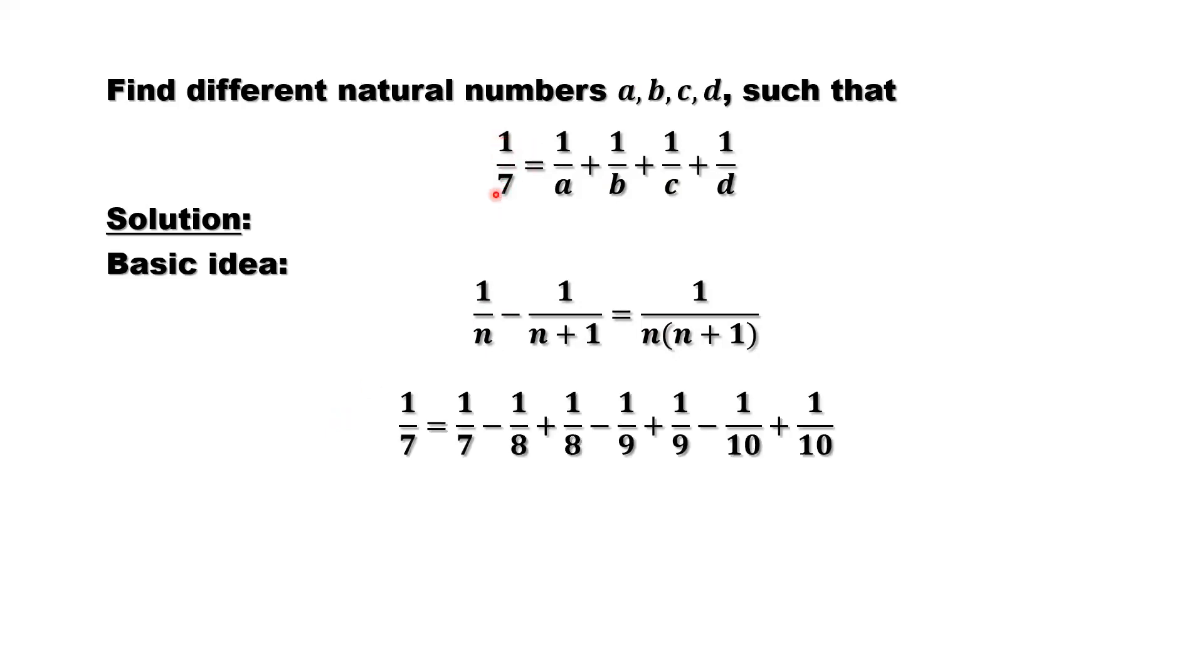Left hand side is 1/7. Right hand side, we also have 1/7 minus 1/8 plus 1/8. We didn't do anything. Positive and negative cancel each other, so the equal sign is still true. Then minus 1/9 plus 1/9, that's 0. Minus 1/10 plus 1/10, that's 0. So this equal sign is still true.